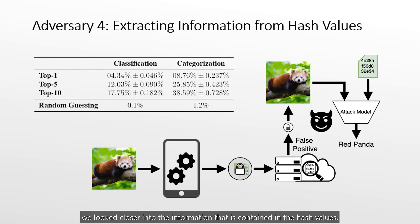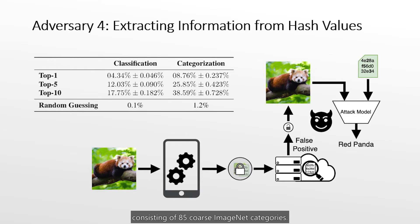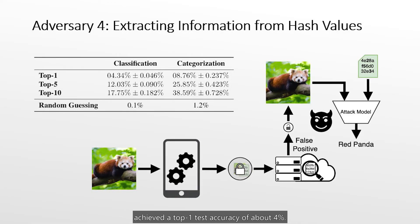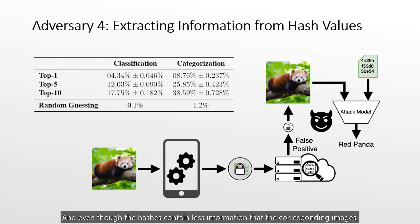To further extend our analysis, we examined the information contained in hash values. We computed hashes for samples from the ImageNet training split with 1,000 classes and also created a dataset of 85 coarse ImageNet categories. We then trained a simple fully connected network to predict class labels based only on the image hashes, evaluating the classifier on the ImageNet validation split. Our classifier achieved a top-1 test accuracy of about 4% on 1,000 classes — note that random guessing only achieves 0.1% expected accuracy. These results confirm that hashes contain information about image content, and even though they contain less information than the images themselves, they should be handled with care in practical applications.